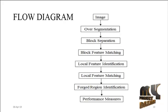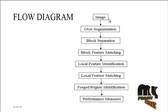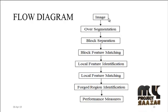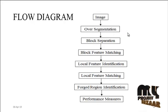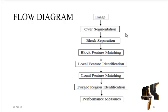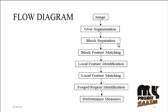Now we are going to discuss the flow diagram for the process. First, an input image is taken from the dataset, which consists of several tampered images. After selecting a tampered image from the dataset, over-segmentation is carried out using the SLIC segmentation method. Over-segmentation is otherwise known as approximate segmentation of the region.